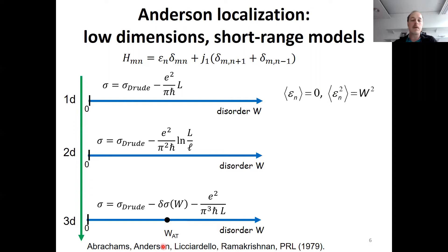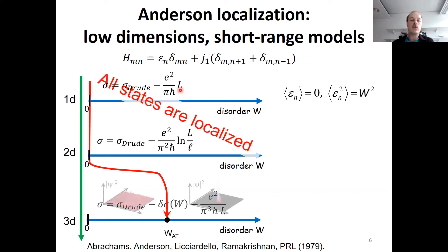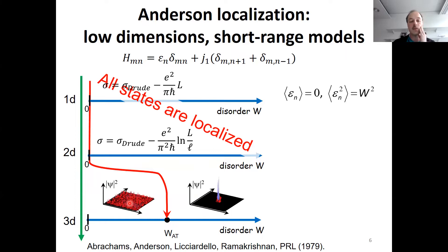In the GIGO4 paper it was understood that in short-range models, the weak localization corrections diverge: linearly in 1D, logarithmically in 2D, and converge with a finite contribution in 3D depending on the disorder amplitude. This means that in the thermodynamic limit, all states are localized in 1D and 2D short-range models. But in three dimensions, there is a finite disorder amplitude and a transition from delocalized to localized. The immediate question following this paper was whether it is possible to restore an Anderson delocalized phase or a localization transition in low-dimensional systems.